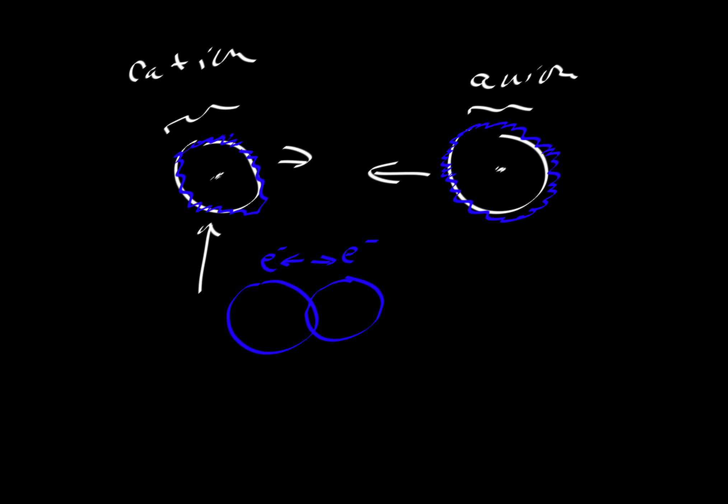And so there's eventually going to be some balance, some equilibrium distance, where the atoms are just the right distance apart. Where if they're further apart than some given distance, let's say r_e is the equilibrium distance.